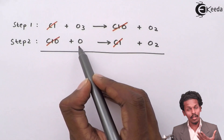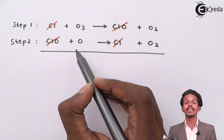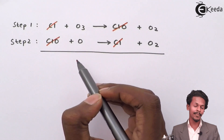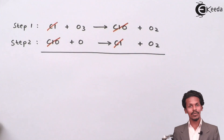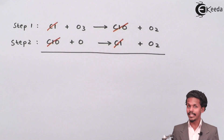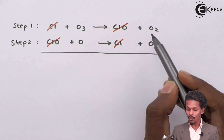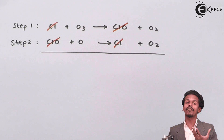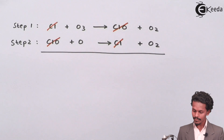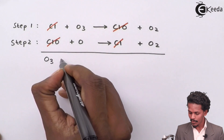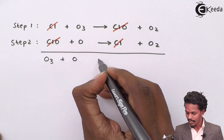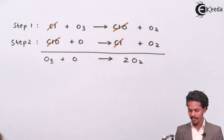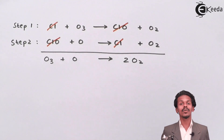Looking at the single oxygen atom O, it appears as a reactant in step two but not as a product on the right-hand side in atomic form — only O2 molecules are present. Therefore, O cannot be cancelled. The overall reaction that remains is: O3 + O → 2O2.